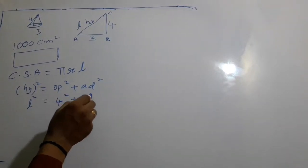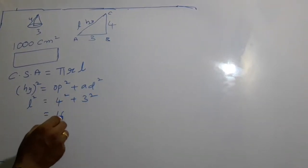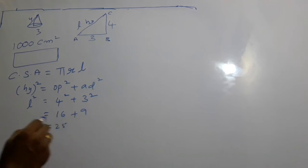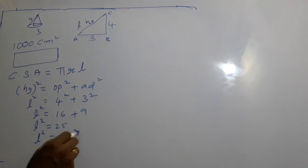Adjacent is 3 squared. 4² is 16, 3² is 9, together 25. l² = 25. Square root of both sides: l = 5.